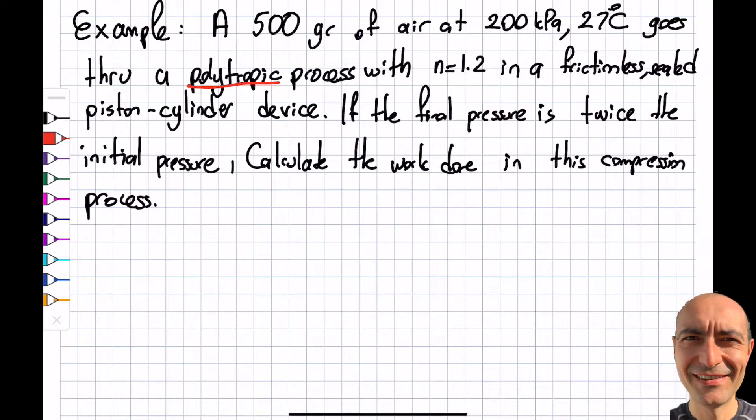It is very similar to the first example. I have air and I have half a kilogram of it at a particular pressure and particular temperature. It says that it goes through a polytropic process. This is new.